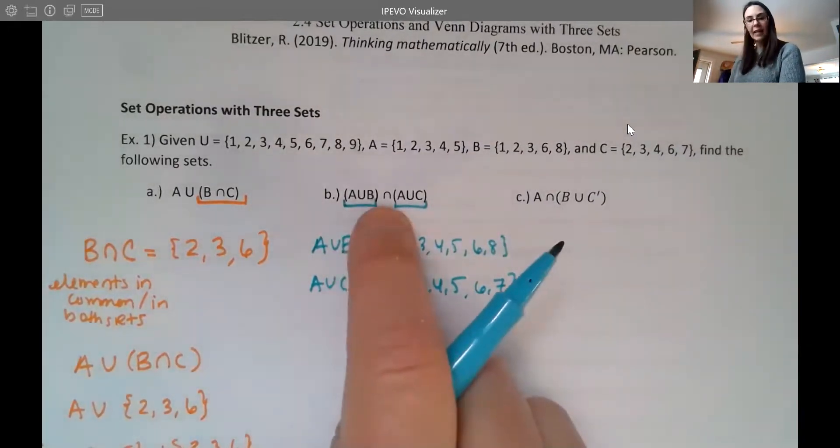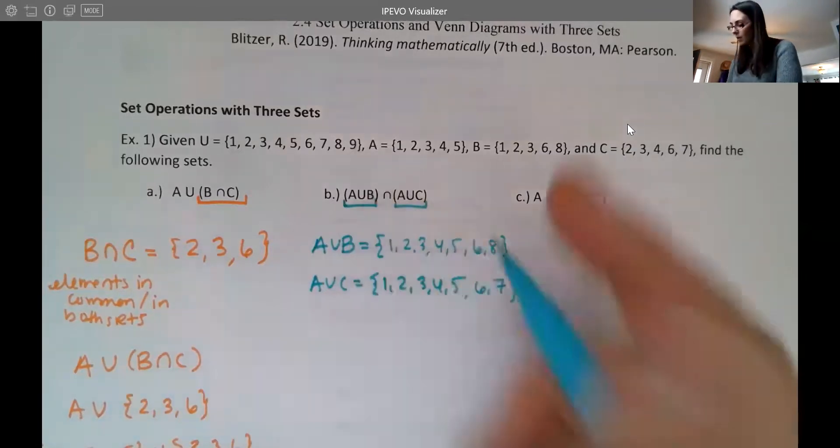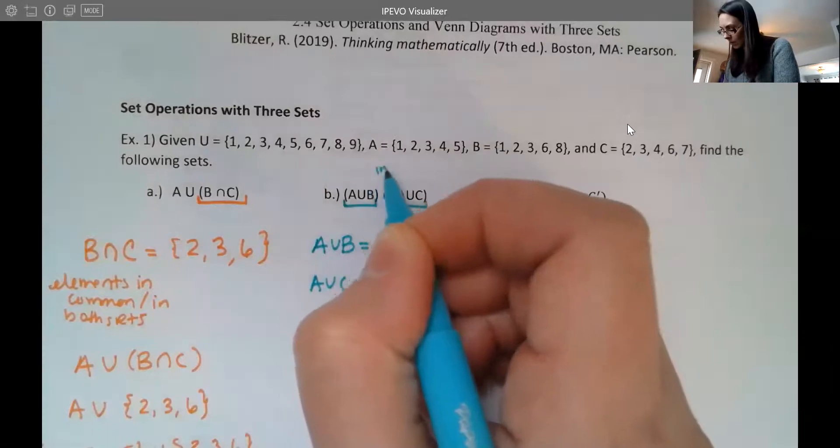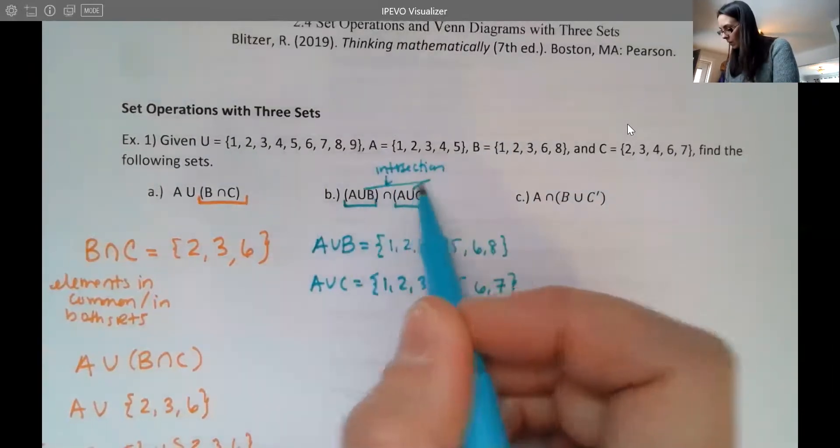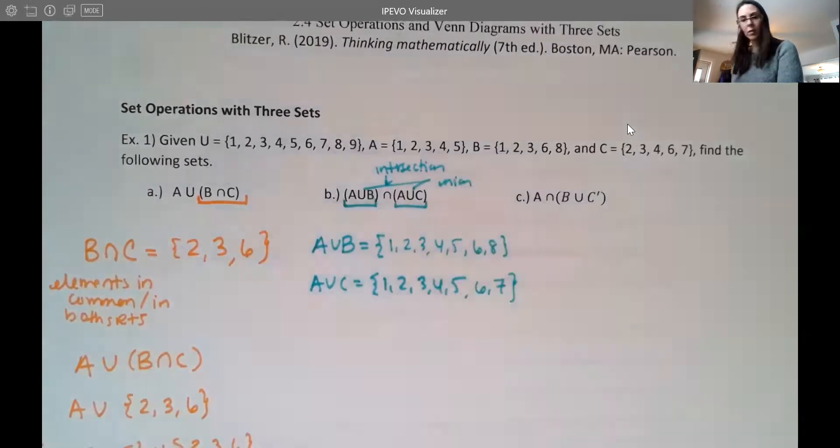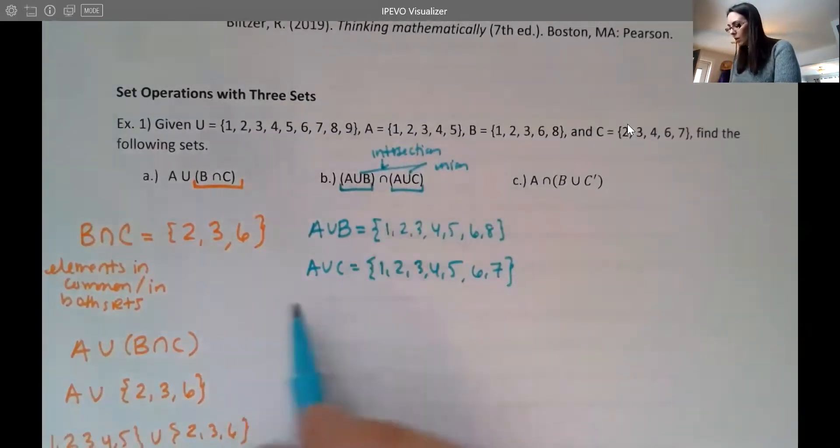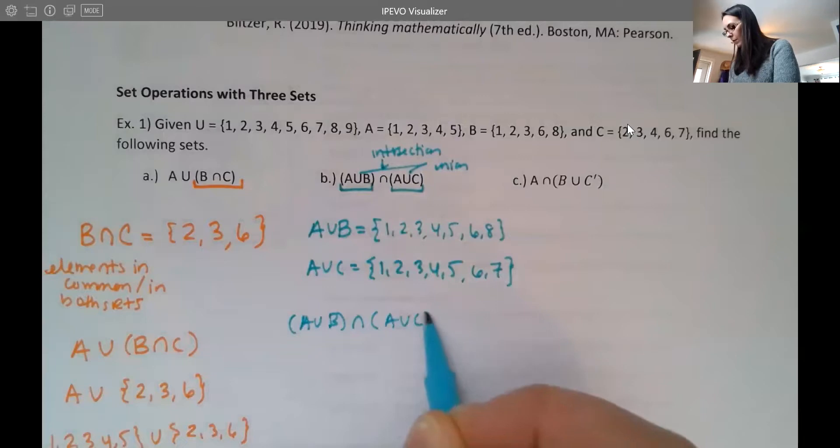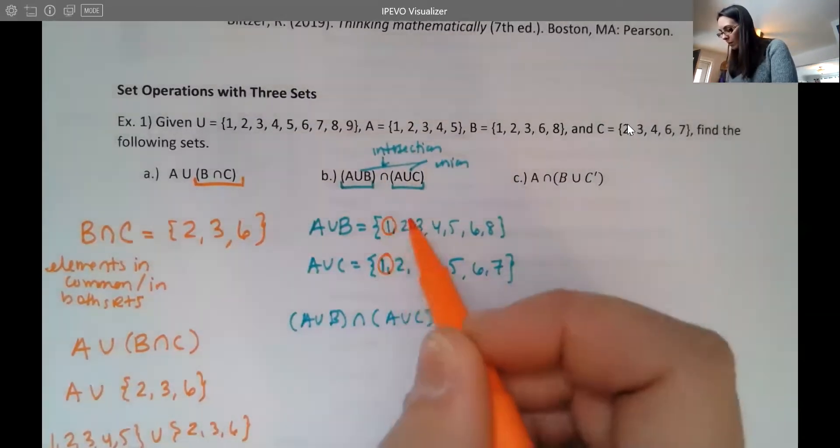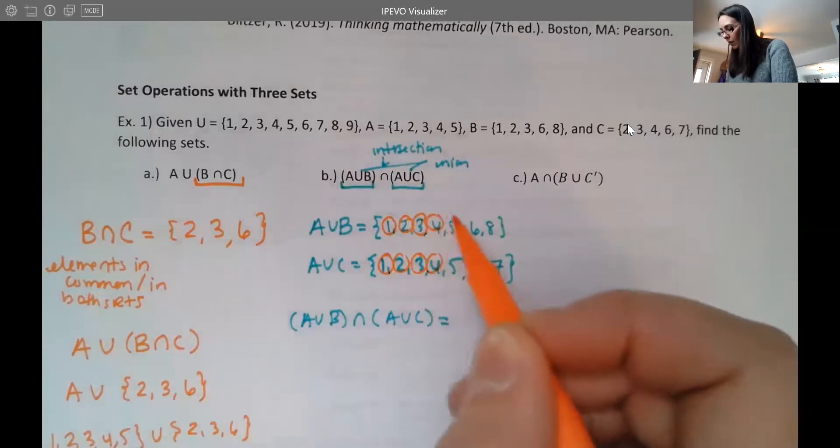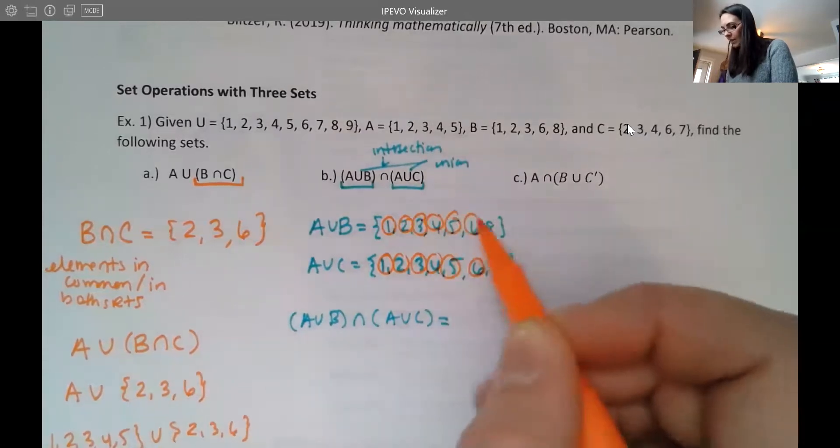Now I want to find that intersection. So remember this symbol here means intersection. That's what's in common. So this one means intersection. And then the two U's mean, okay, so we're uniting. So now we're looking for the intersection. So I want to see, well, what's in common between these two? Well, they both have a one in common. They both have a two in common, three, four, five, and six.